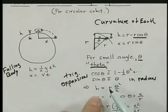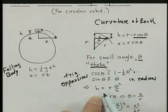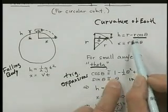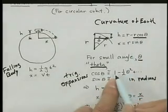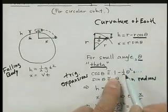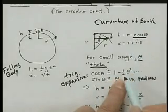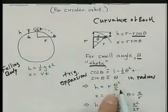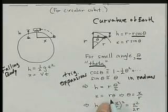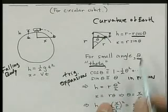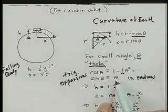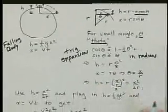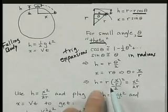And so now we can write a simplified equation for h, because we have r minus r cosine theta, and we subtract r times 1, it gets rid of the first r, and then we subtract a negative 1 half theta squared with r, we just have positive r theta squared over 2. x is approximately r times theta, using the sine expansion, and therefore theta is x over r.